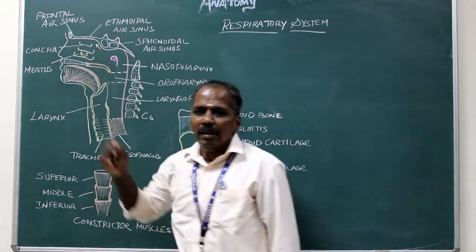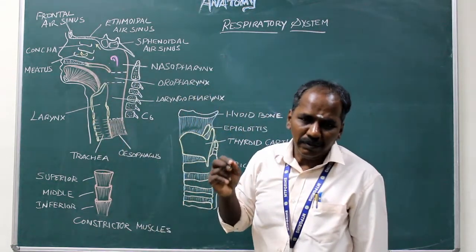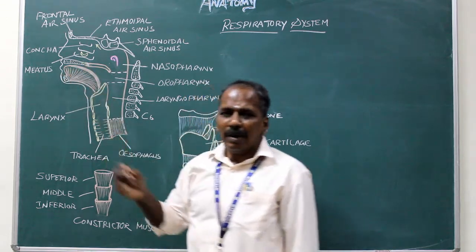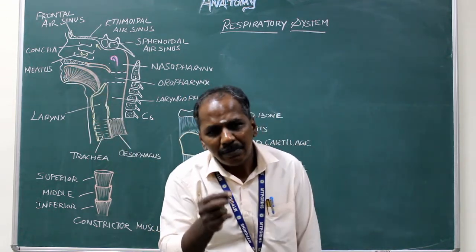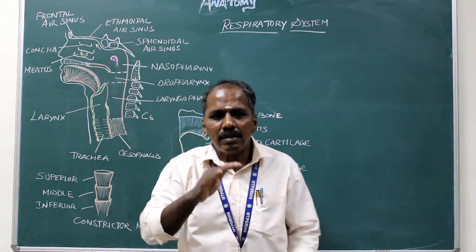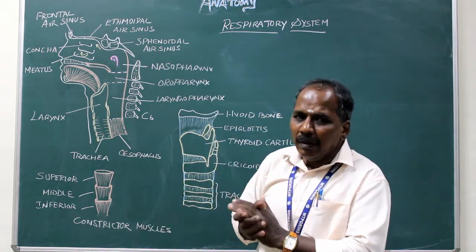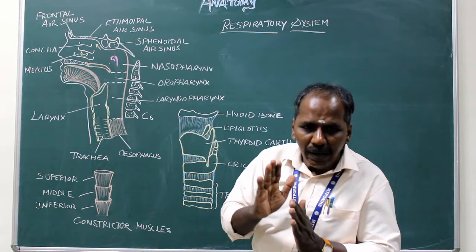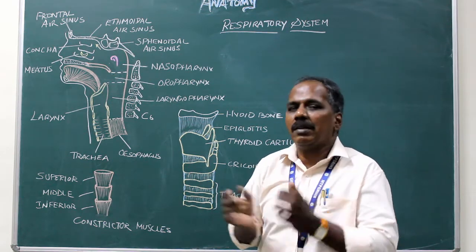Roof: It is formed by the cribriform plate of the ethmoid bone. Floor: It is formed by the palatine process of maxilla and the horizontal plate of palatine bone. The medial wall is formed by the vomer and perpendicular plate of the ethmoid bone.